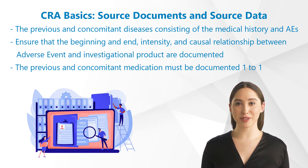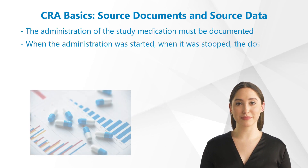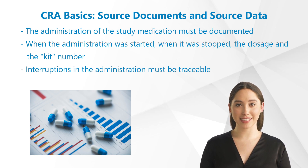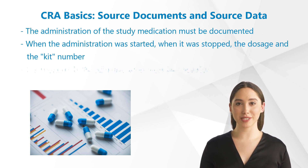Don't let the investigator tell you that there is only one way to dose and everyone should know it. The changes in dosage as well as the reason must also be traceable. The dosage of a medication is not reduced or increased without reason and this reason must be made transparent. The administration of the study medication must also be documented: when the administration was started, when it was stopped, the dosage and the kit number if applicable. Interruptions in the administration must also be traceable.